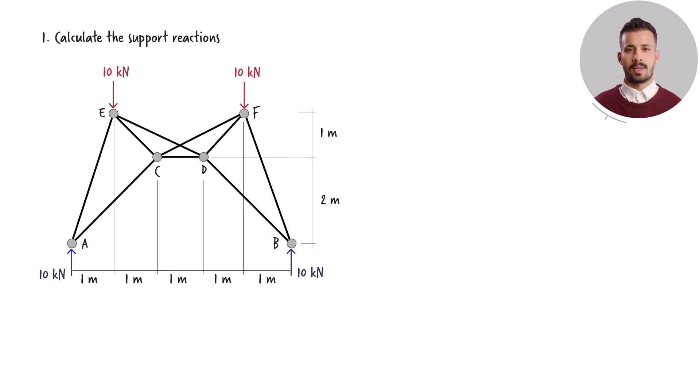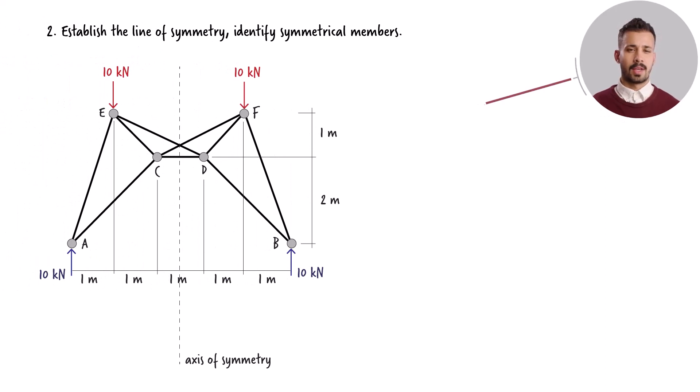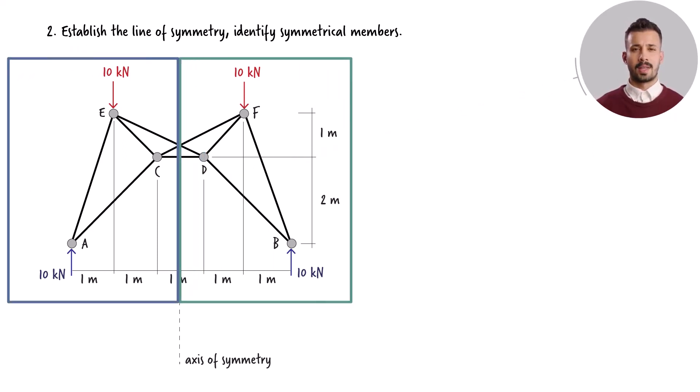This diagram illustrates the outcomes of the analysis conducted up to this point. By visually examining the truss and the forces that are acting on it, a notable symmetry becomes evident. Specifically, if we draw a vertical line through the truss's center, it becomes apparent that the left side of the structure perfectly mirrors the right side.